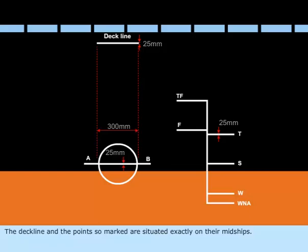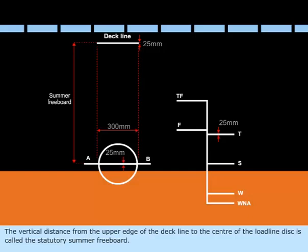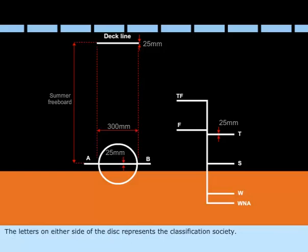The vertical distance from the upper edge of the deck line to the center of the load line disk is called the statutory summer freeboard. The letters on either side of the disk represent the classification society.